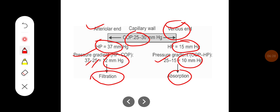You can see the 12 mm of Hg gradient is created at the arteriolar end and 10 mm of Hg gradient is created while the fluid is being absorbed. Some amount of the fluid remains in the interstitium and that is drained by the lymphatics.